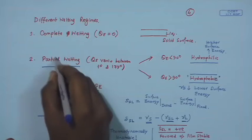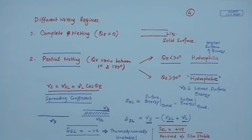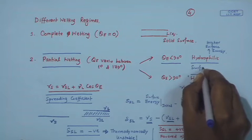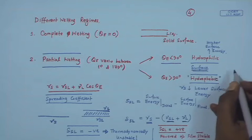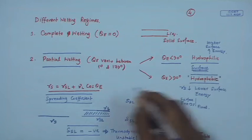In principle, two primary configurations are possible: complete wetting and partial wetting. Within partial wetting, if the liquid is water, the equilibrium contact angle can be either lower than 90 degrees or higher than 90 degrees. Depending on that magnitude, the surface is conventionally termed hydrophilic if less than 90 degrees and hydrophobic if more than 90 degrees.